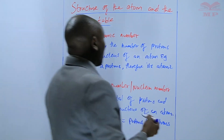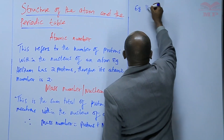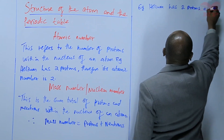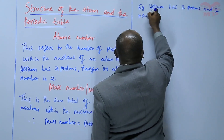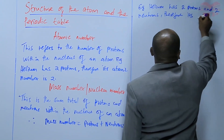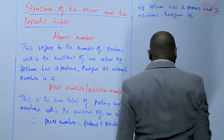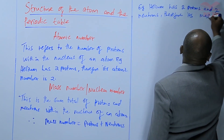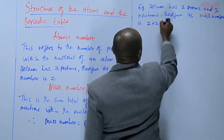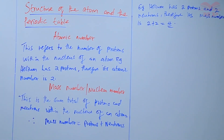For example, using helium again: helium has two protons and two neutrons. Therefore, its mass number is two plus two, which equals four. It has a mass number of four. So we have defined those two terms.